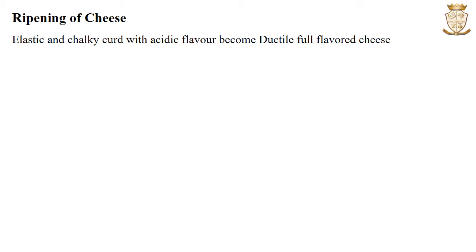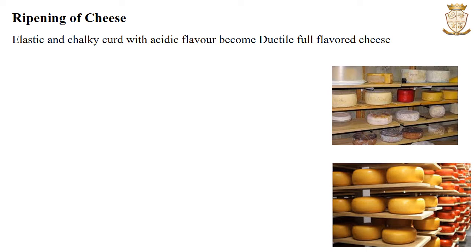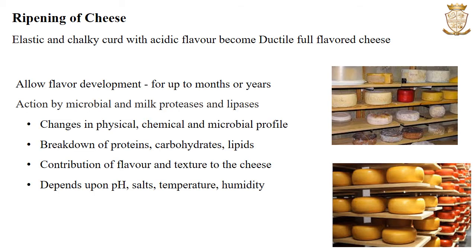The next stage is the ripening of cheese. The cheese is ripened or matured at about 10 degrees Celsius to allow flavour development, and this process may take up to months or years. Ripening involves the modification of proteins and fats by microbial and milk proteases and lipases. Transformation of the elastic and chalky curd with an acidic flavour to a ductile, full-flavoured cheese is achieved through proper cheese ripening.